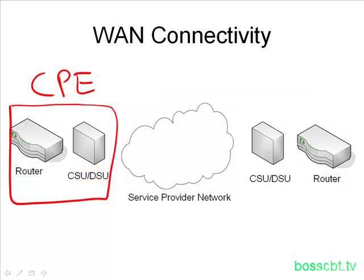Historically, the router and CSU-DSU were two separate physical pieces of equipment. But now the CSU-DSU is oftentimes built into a serial card which fits on the router, so you don't normally see a separate piece of equipment. However, it's still good to conceptually think of it as a different piece of equipment because it has a dedicated function relevant to our discussion.